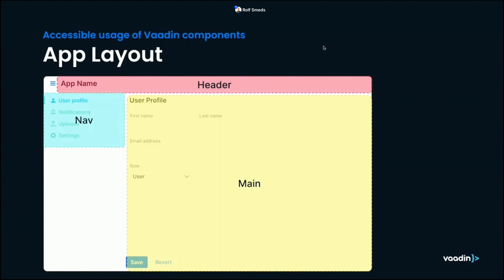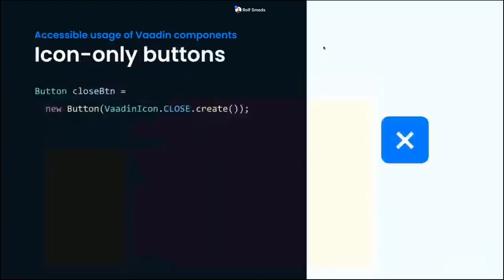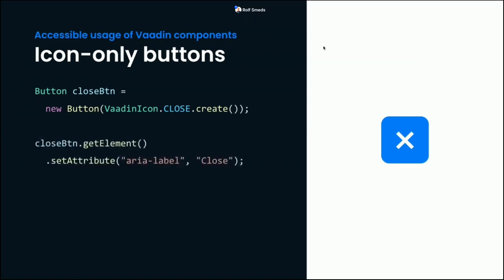One of the most common issues I'd expect to see in any web application is icon-only buttons that provide no way for a screen reader to identify what the button is for. For example, a close button with a cross icon — the screen reader won't know it's a cross regardless of whether it's a Vaadin icon, SVG, or PNG. The solution is not to add an alt attribute to the icon, but to use the aria-label attribute on the button itself: button.getElement().setAttribute("aria-label", "Close").